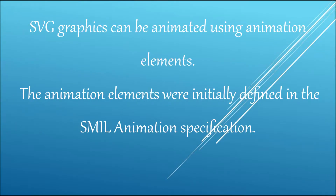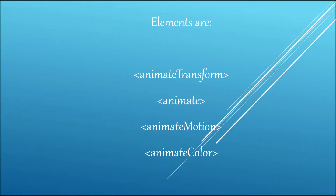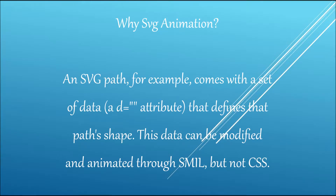Let me define some SVG basics. SVG graphics can be animated using animation elements, and the animation elements are defined in the SMIL animation specifications. These elements are: animate, transform, animate, animate motion, and animate color. Animate color is deprecated from the current version of SVG.